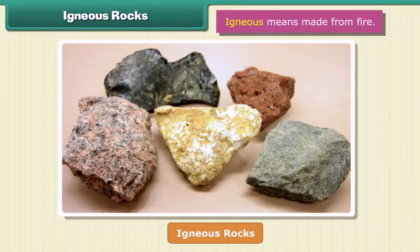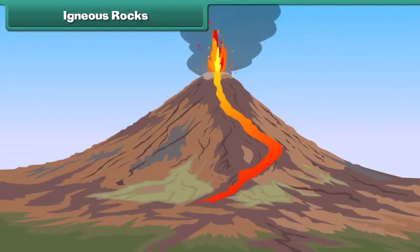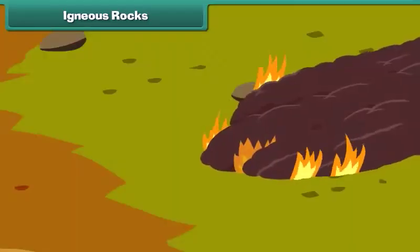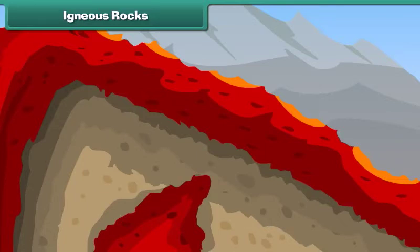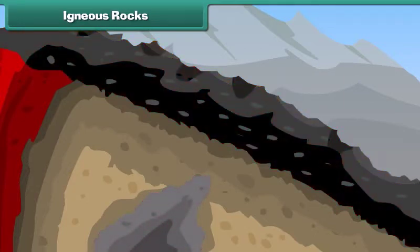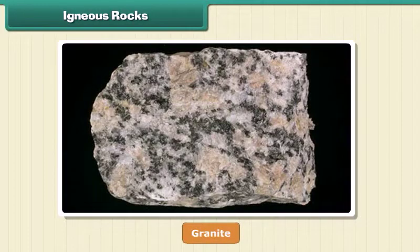Igneous means made from fire. When volcanoes erupt, it causes liquid rock to rise above the ground. When this liquid rock is present inside the earth, it is called magma. This magma cools and becomes solid. Rocks thus formed are called igneous rocks. They are also called primary rocks. Granite is an example of igneous rock.